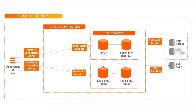There will be two database connection strings: one for primary connection, which interacts with the primary instance for both read and write requests, and another one for read-only connection, which interacts with the read-only instance for read-only requests.